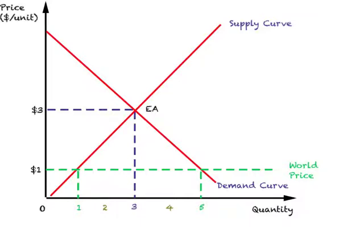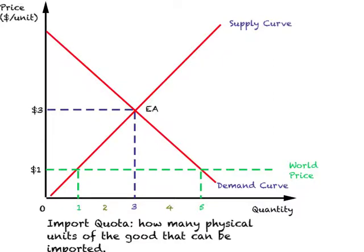Last time we examined the consequences of a tariff causing restricted trade. Now when we have free trade, the government decides to place an import quota rather than a tariff. An import quota limits how many physical units of a good can be imported. In this case, the government says you can import a maximum of 2 units. Imports is the difference between domestic demand and domestic supply.